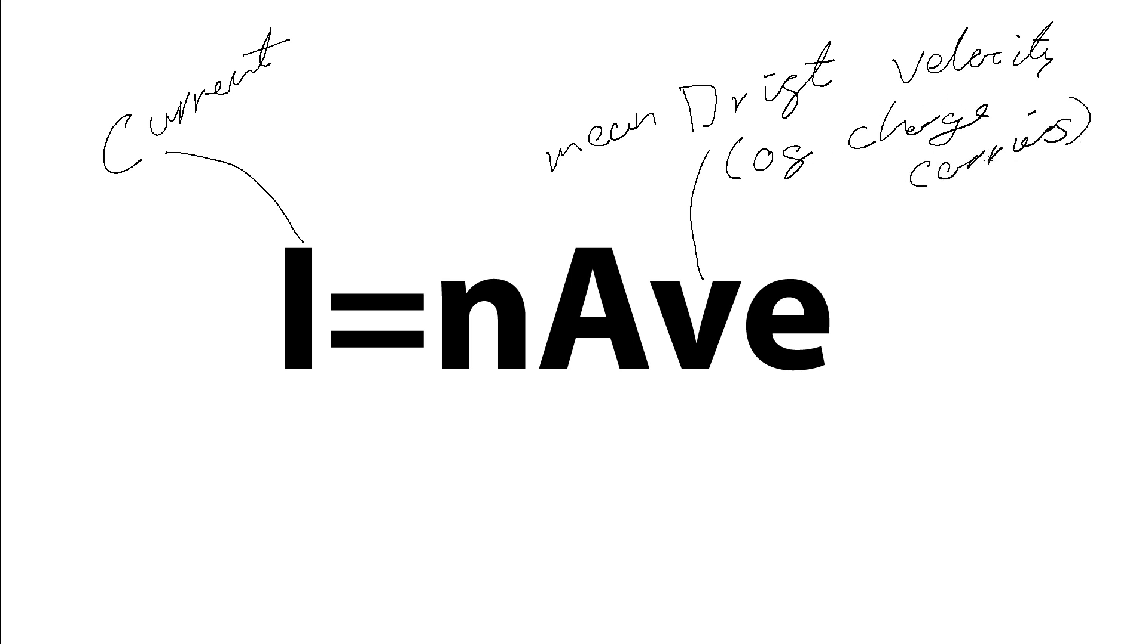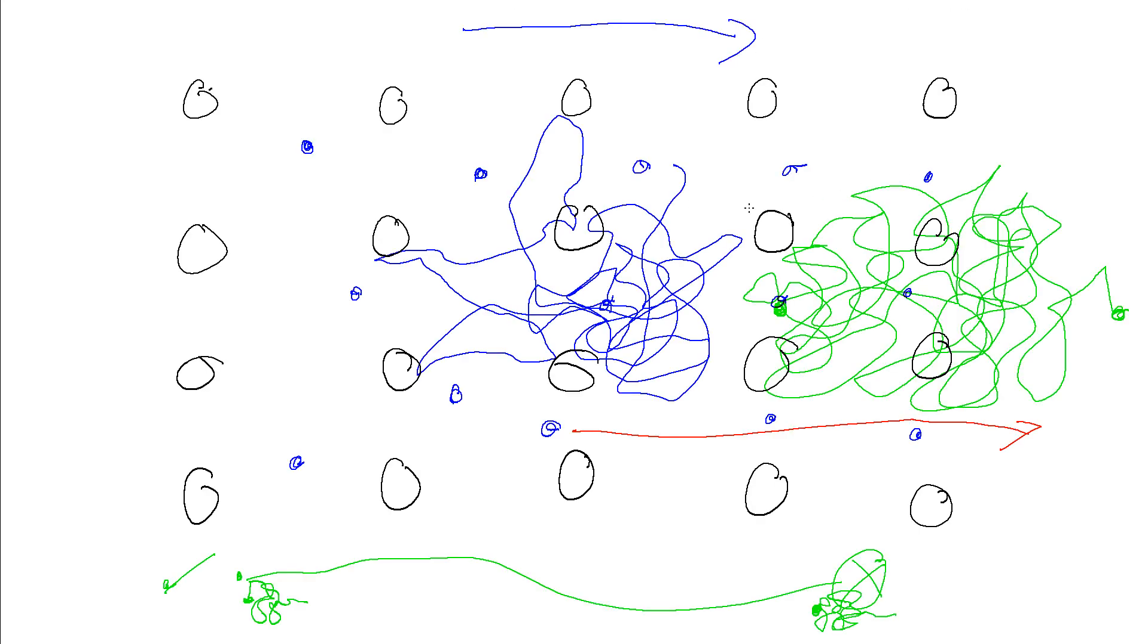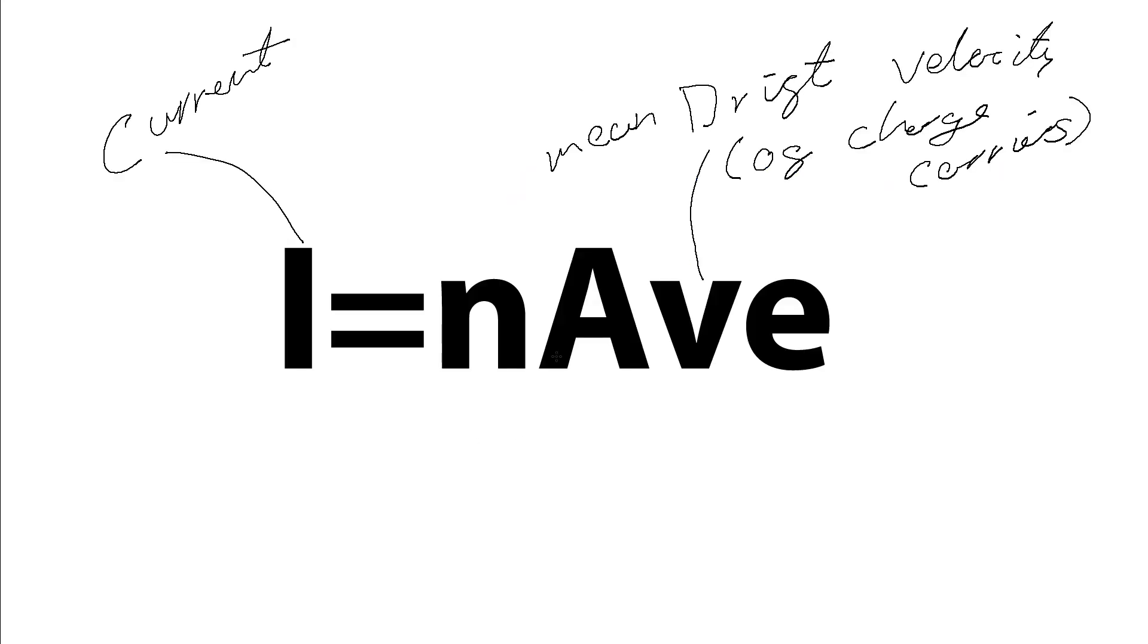So I said charge carriers rather than electrons, because as we see here, there could be electrons inside a metal, or it could be ions inside some solution. So charge carriers mean whatever it is that's carrying the charge, so the electrons or the ions in the solution. This E is the charge that is on the charge carriers. So for an electron, that's going to be 1.609 times 10 to the minus 19 coulombs.